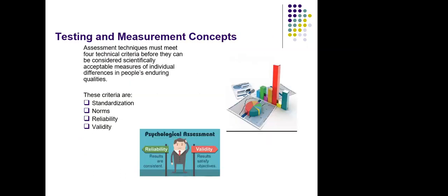Coming to the main topic of the chapter — testing and measurement concepts. Assessment techniques must meet four technical criteria before they can be considered scientifically acceptable measures of individual differences in people's enduring qualities. These criteria are: standardization, norms, reliability, and validity. These four criteria are very key to any kind of test and measurement.